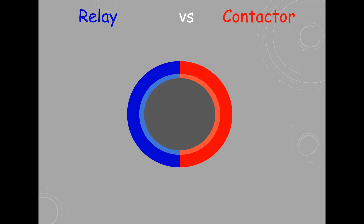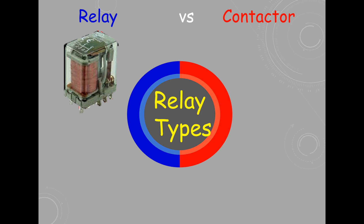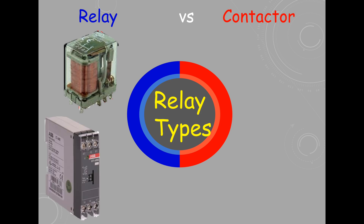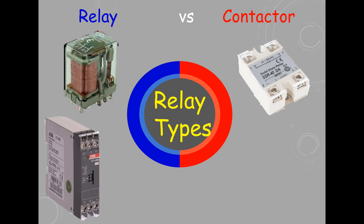Depending on the operating principle and structural features, relays are of different types such as: Electromagnetic relay, Timer relay, Solid state relay, and Reed relay.